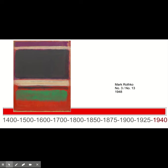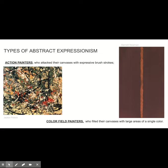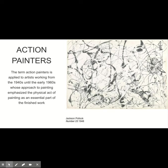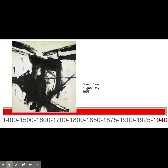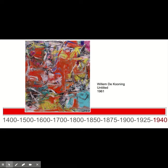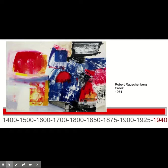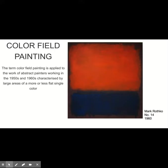There are generally two types of abstract expressionism. There are action painters who attack their canvases with expressive brush strokes, maybe throwing their paint, scraping the canvas, using larger motions. Then there are color field painters who fill their canvases with large areas of single colors. The action painters, working from the 1940s through the 1960s, really approached painting to emphasize the physical act of making the work as an essential part of the finished work. Color field painting was applied to abstract painters working in the 50s and 60s who characterized large areas of more or less flat, single colors.